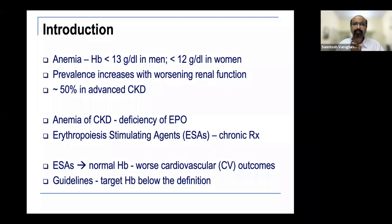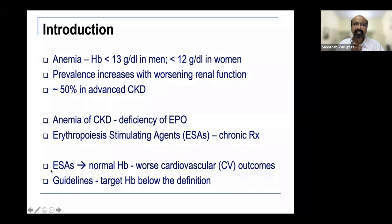There are new agents on the horizon with some controversy. Earlier studies — I believe in the late 1990s — that targeted normal hemoglobin using ESAs showed worse cardiovascular outcomes. Now we certainly don't want hemoglobin to be fully normal; we just want it slightly below normal, and we have targets we will discuss.